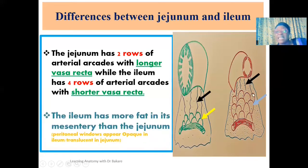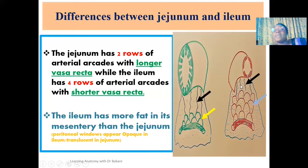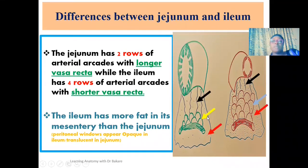The mesentery of the ileum has more deposition of fat, while the jejunum has less fat deposition. This causes the peritoneal windows — the spaces created between the vasa recta — to appear opaque in the ileum, blocking the view of the posterior abdominal wall. In the jejunum, these peritoneal windows appear translucent, meaning you can see the posterior abdominal wall through them.